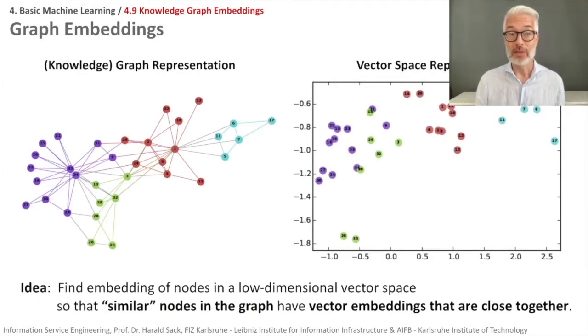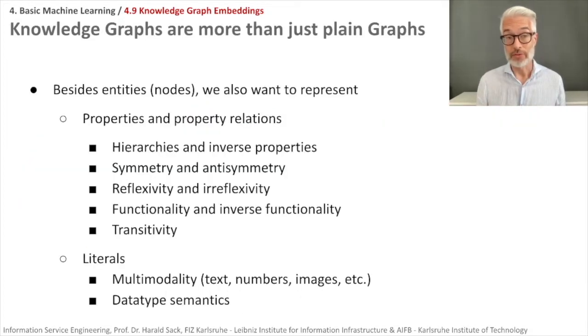Then we come up with something like graph embedding. We are transforming the graph representation into a vector space representation. We will find an embedding of nodes in a low dimensional vector space, producing dense vectors so that similar nodes in the graph have vector embeddings that are close together. However, this holds for any kind of graph. Knowledge graphs are a special kind of graph, so we have a bit more restrictions and semantics to encode there.